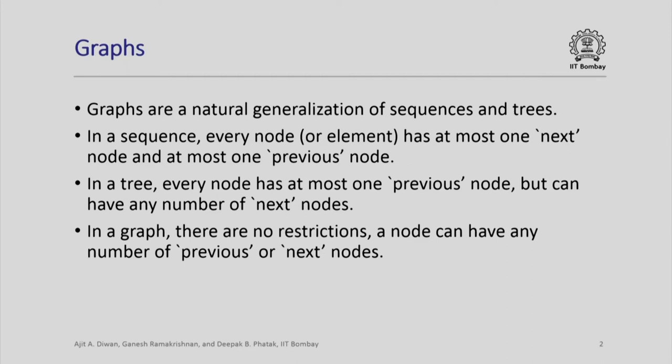In a sequence, every node or element has at most one next node and at most one previous node. The first node does not have a previous node, the last element does not have a next element; otherwise every element has one previous element and one next element. In a tree, every node has at most one previous node, which we call the parent, except the root node which does not have any parent, but a node can have any number of next nodes — they are called children in a tree.